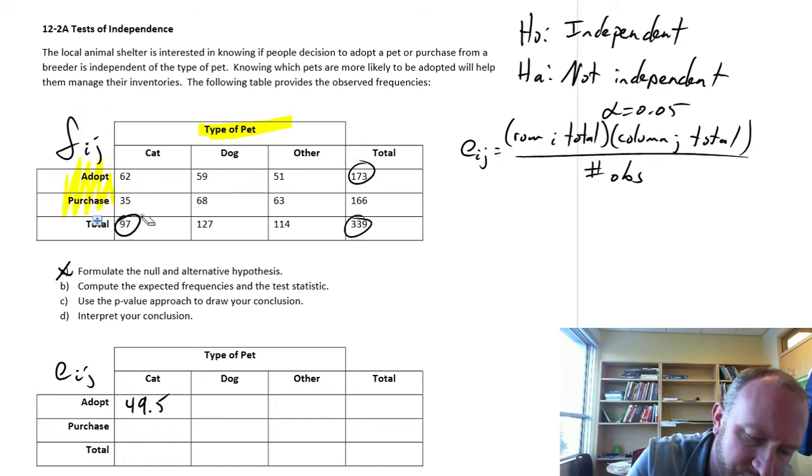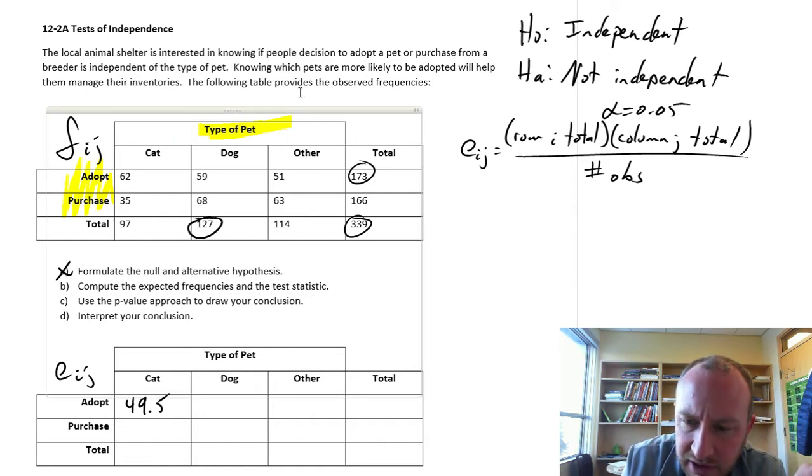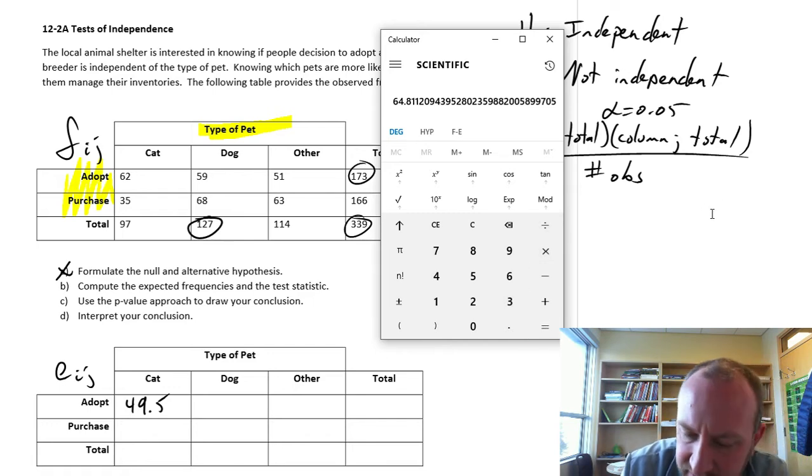So now for dogs, same calculations, slightly different number. So I have 127 times 173 divided by 339. So 64.8.